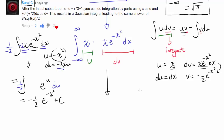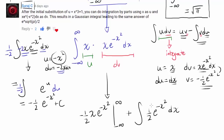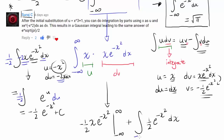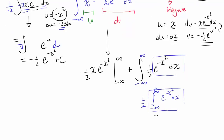We have u·v, so u times v is x times negative one-half e to the negative x squared, evaluated from negative infinity to infinity. And minus integral of v·du, where v is negative one-half e to the negative x squared — let me turn that negative sign to positive — so we have plus one-half times the integral from negative infinity to infinity of e to the negative x squared dx. We have an expression that we know how to evaluate: the Gaussian integral equals square root of pi. So this entire part equals square root of pi over 2.